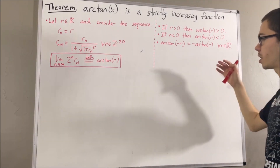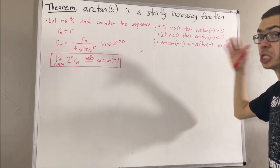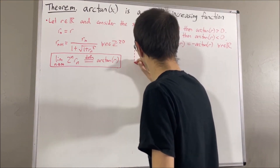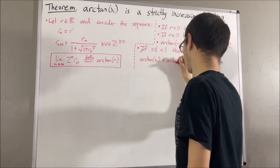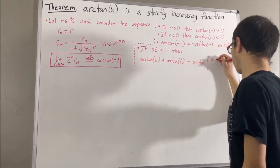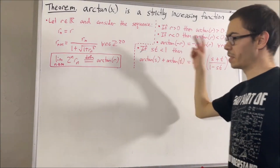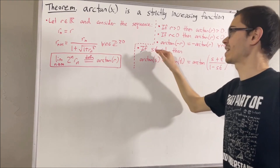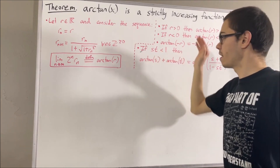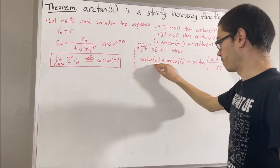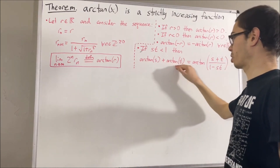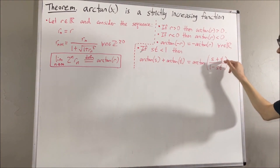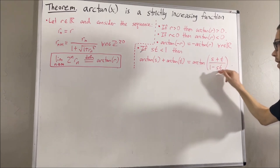Another thing that we proved was an addition formula. Given any two real numbers s and t such that st is less than 1, the arctangent of s plus the arctangent of t is equal to the arctangent of s plus t over 1 minus st.